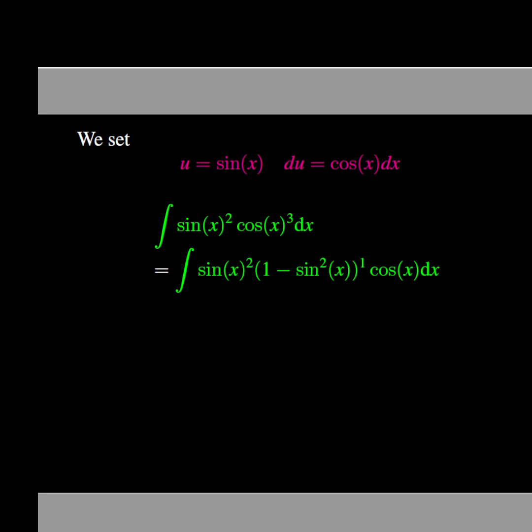The integral of sine of x to the power 2 times cosine of x to the power 3 dx is equal to the integral of sine of x to the power 2 times the quantity 1 minus sine squared of x, times cosine of x dx. When we substitute u for sine of x and cosine of x dx by du, the original integral is now equal to the integral of u to the power 2 times the quantity 1 minus u squared du.